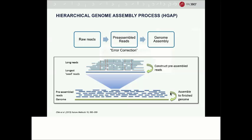Next I'm going to walk through the bioinformatics of large genome assembly, from raw reads to preassembled reads to genome assembly. With PacBio long reads, we use a hierarchical genome assembly process, or HGAP, which proceeds in two rounds. The first round involves selection of seed reads — the longest reads in the dataset. All shorter reads are aligned to these long seed reads to generate consensus sequences with high accuracy. We refer to these high-accuracy long reads as preassembled reads, or P-reads — essentially error-corrected reads. In the next stage, P-reads are aligned to each other to be assembled into contigs.